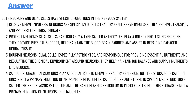Nourishing neurons: glial cells, especially astrocytes, are responsible for providing essential nutrients and regulating the chemical environment around neurons. They help maintain ion balance and supply nutrients like glucose.